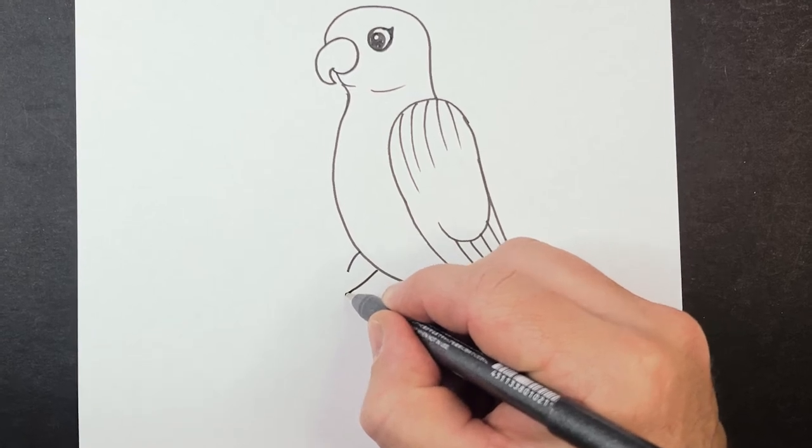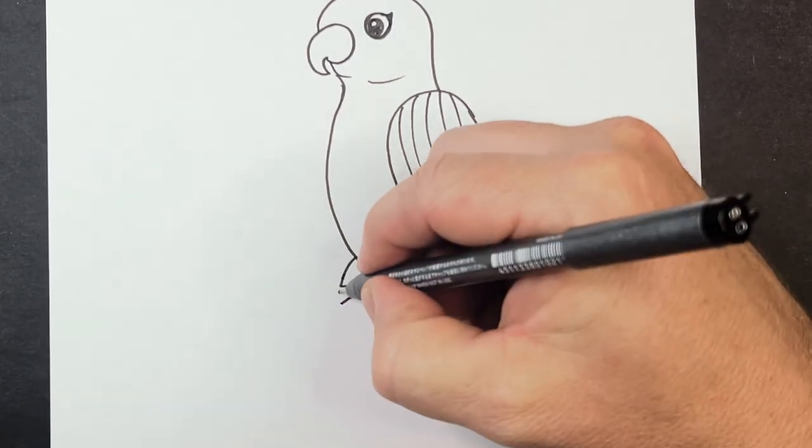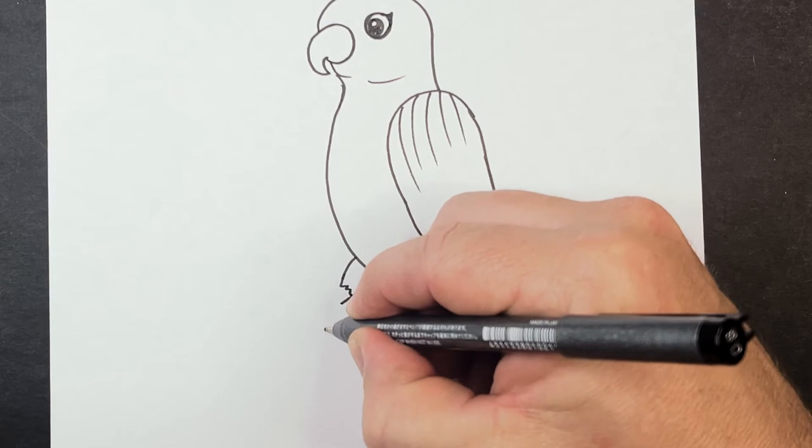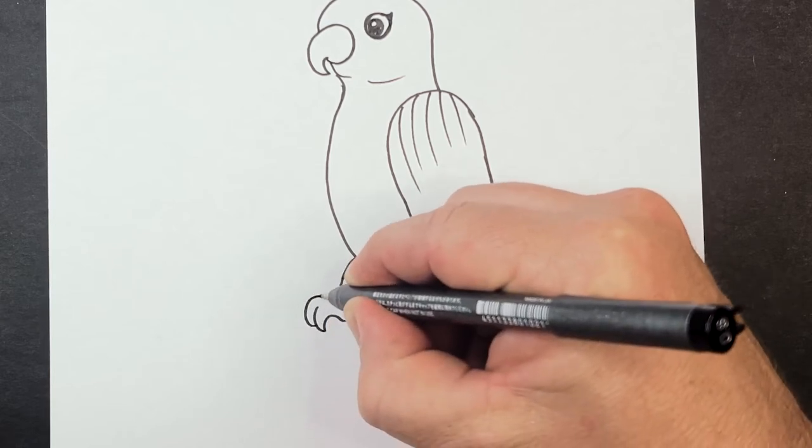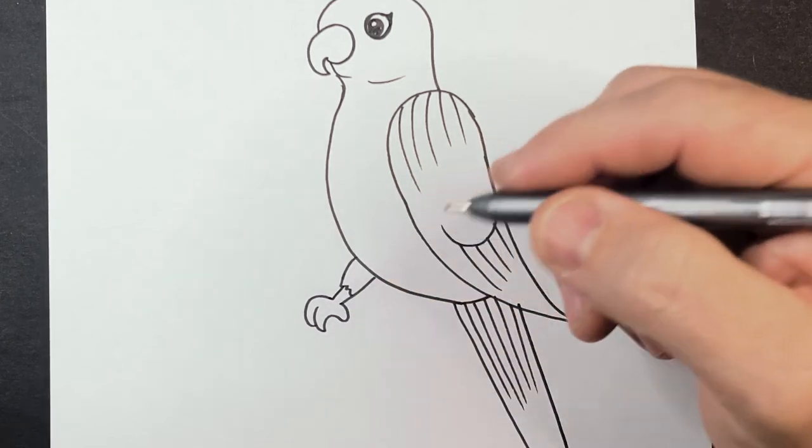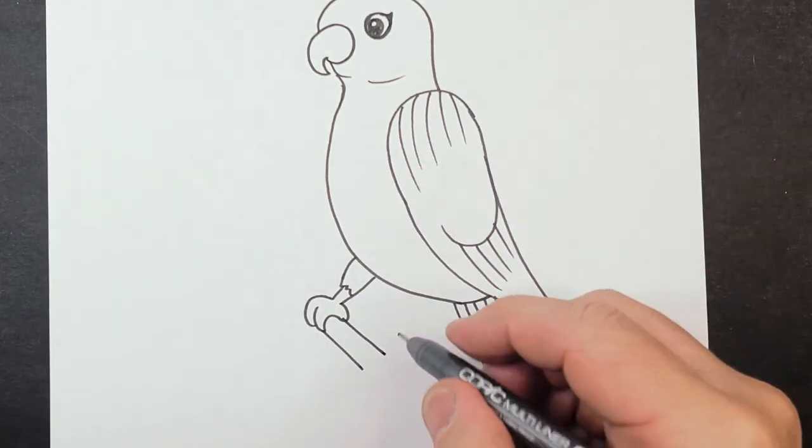Now it's time for the legs. I've got the leg coming out and king parrots actually have two fingers at the front and two at the back, but in this drawing you'll only see the two front ones and one of the back ones because the other one would be behind the other one.